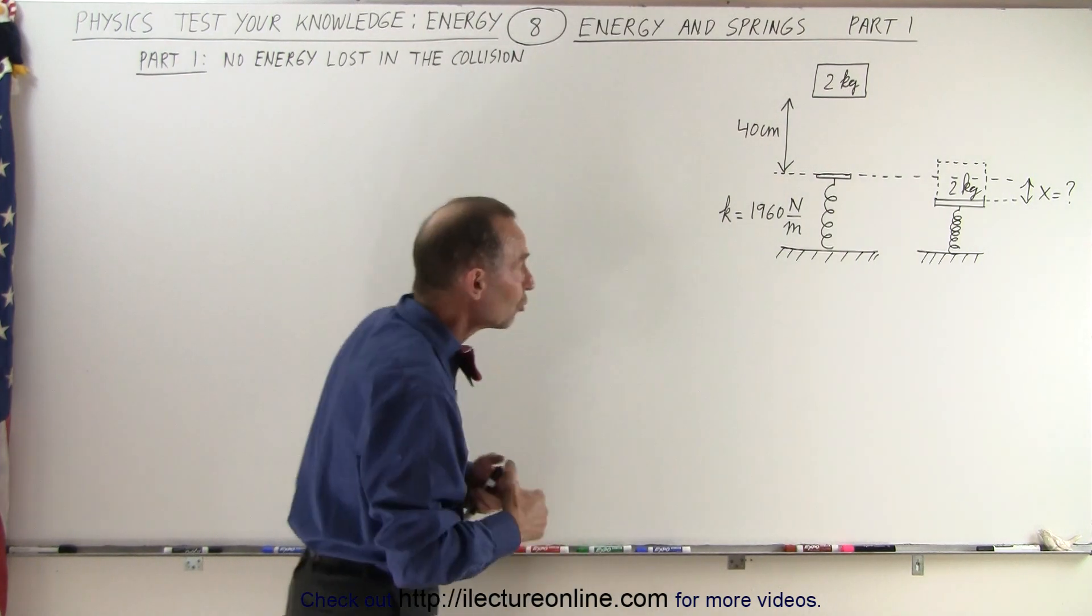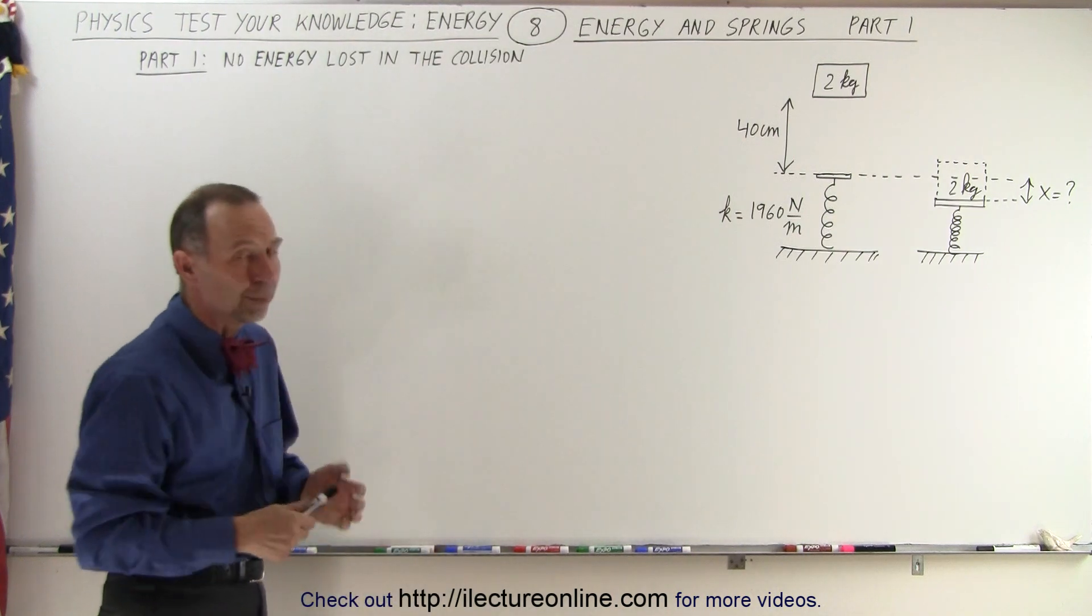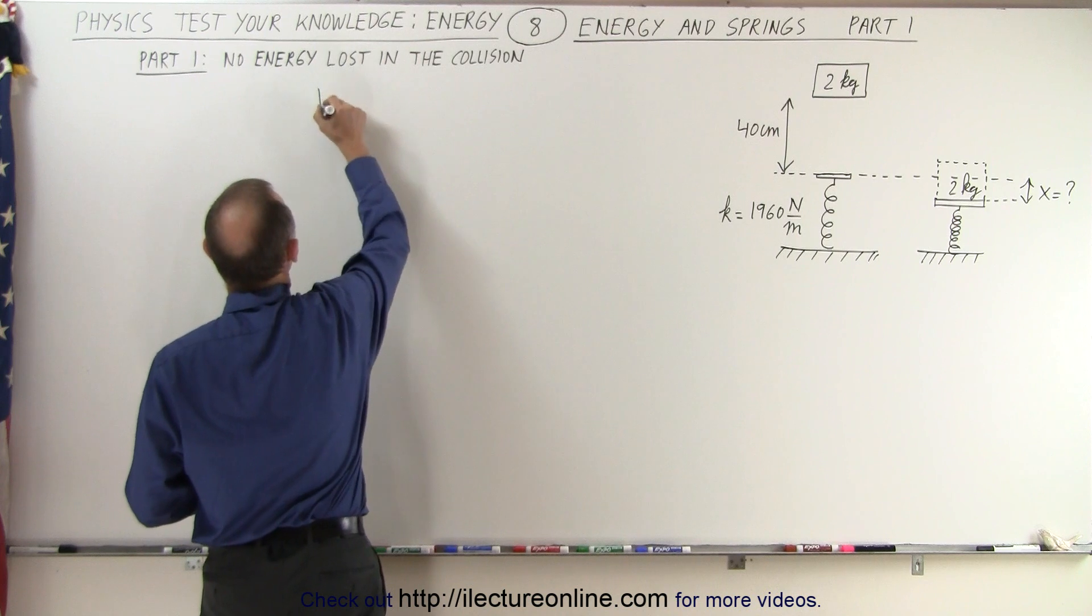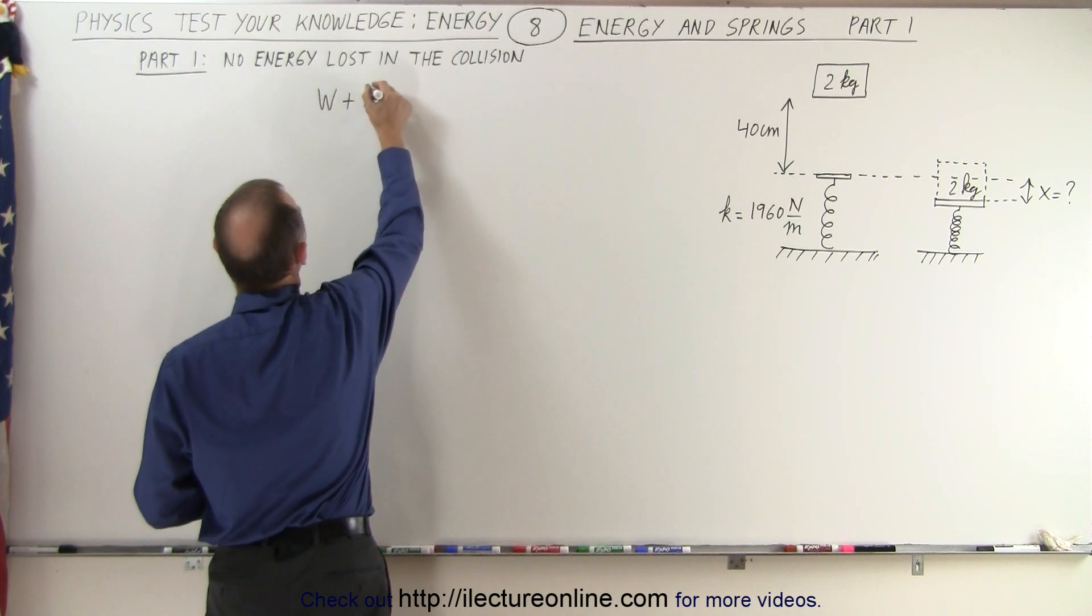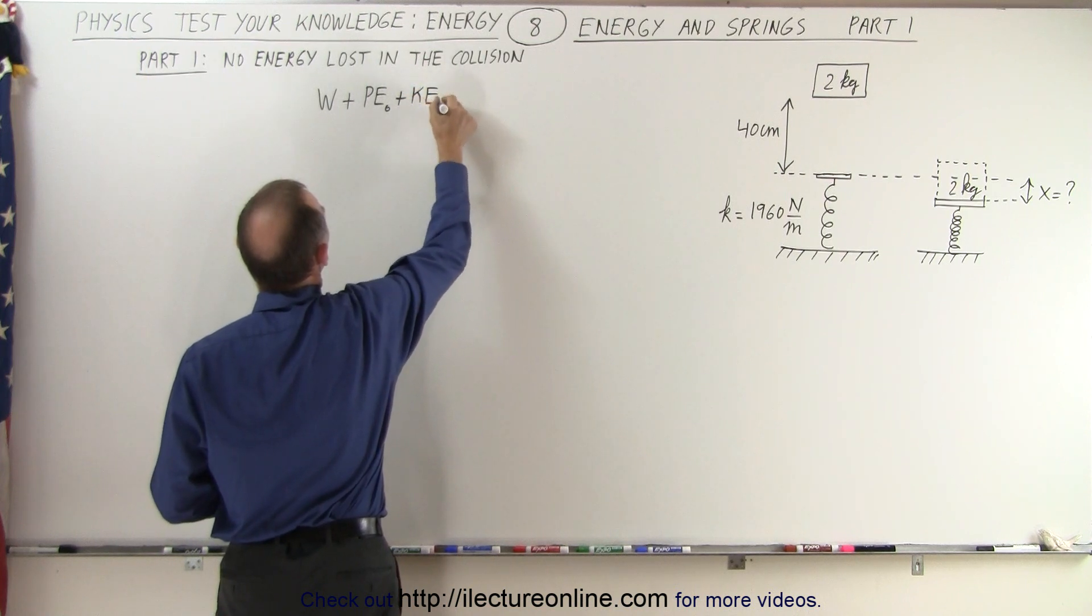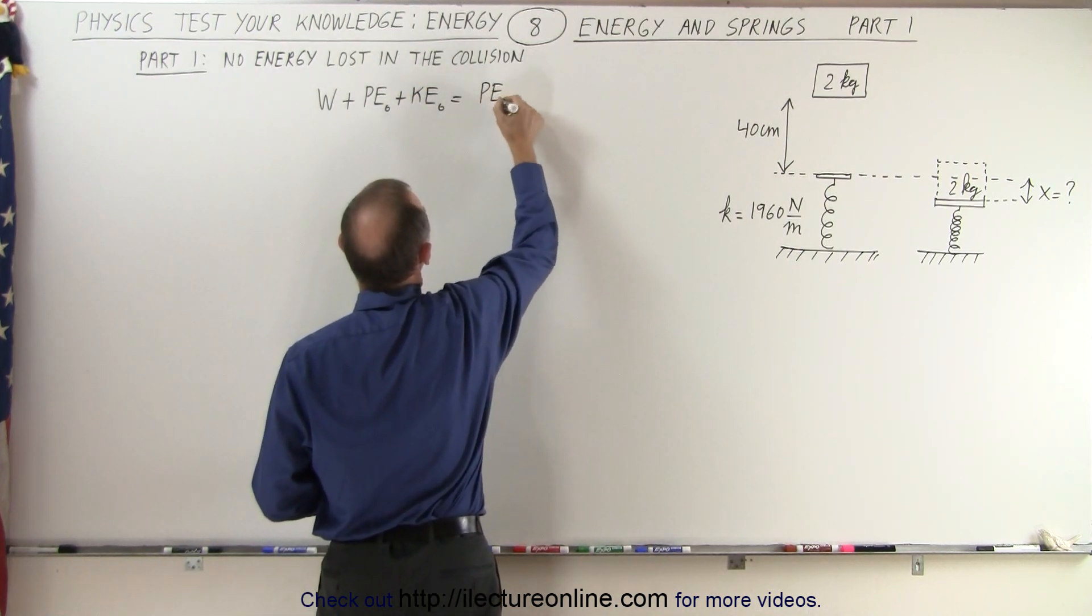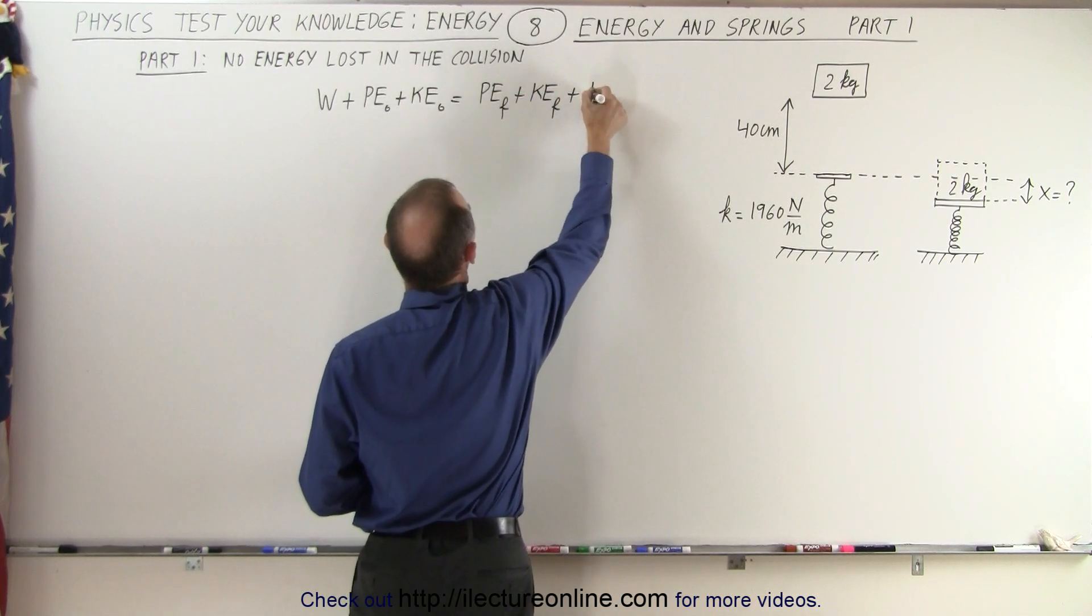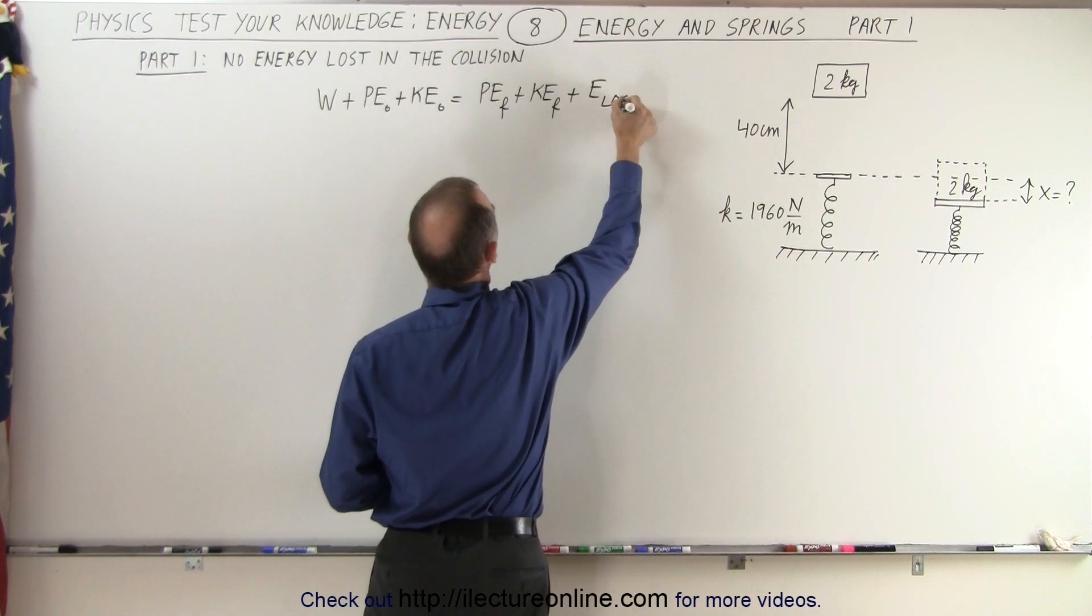In this case, it looks like the energy equation or the energy conservation equation would be a good place to start. So let's go ahead and start with the amount of work put into the system plus the original potential energy plus the original kinetic energy equals the potential energy final plus the kinetic energy final plus the energy lost during the collision.